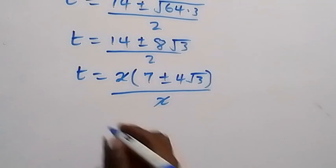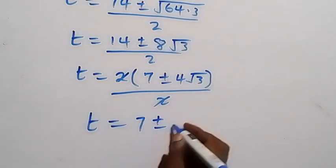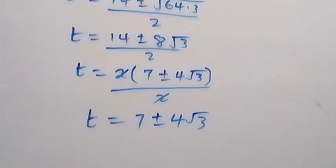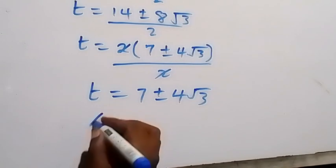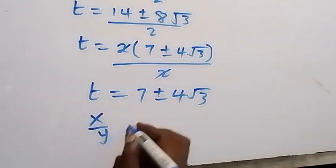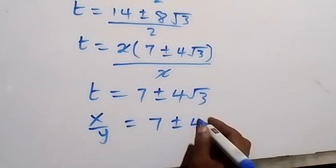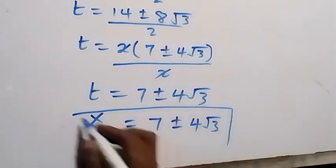And we represent t as x over y. This implies that what we are finding, which is x over y, is therefore 7 plus or minus 4 root 3. And here we have the solution to the problem.